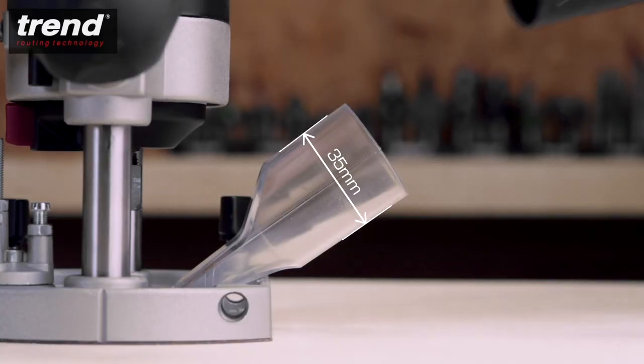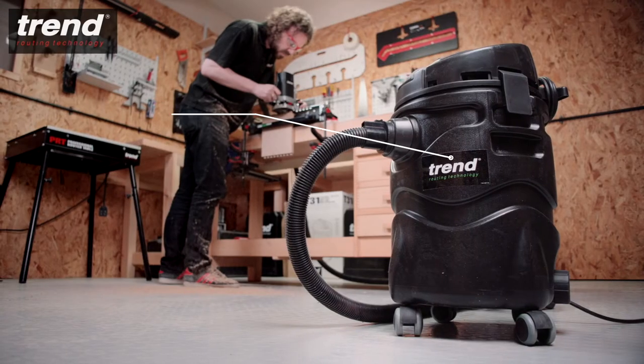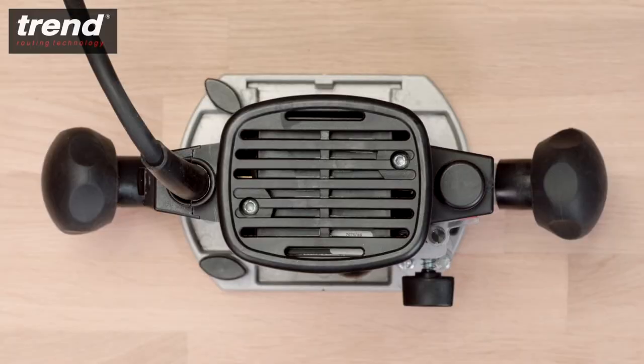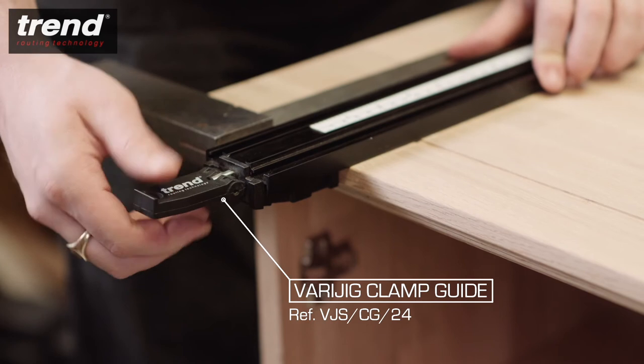The low profile transparent dust extraction spout combined with the Trend T31 dust extractor will maintain a clean working environment when machining. The base has two straight edges, which can run smoothly along a guide.